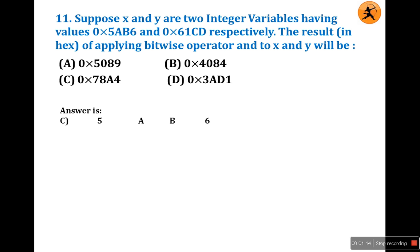We have to calculate the result of the bitwise AND operation. In AND operation, if both values are true we get true; if anyone is false, the answer is false. So take the first number 5AB6: 6 equals binary 0110, B equals 11 so we write 1011, A equals 10 so we write 1010, and 5 equals 0101.